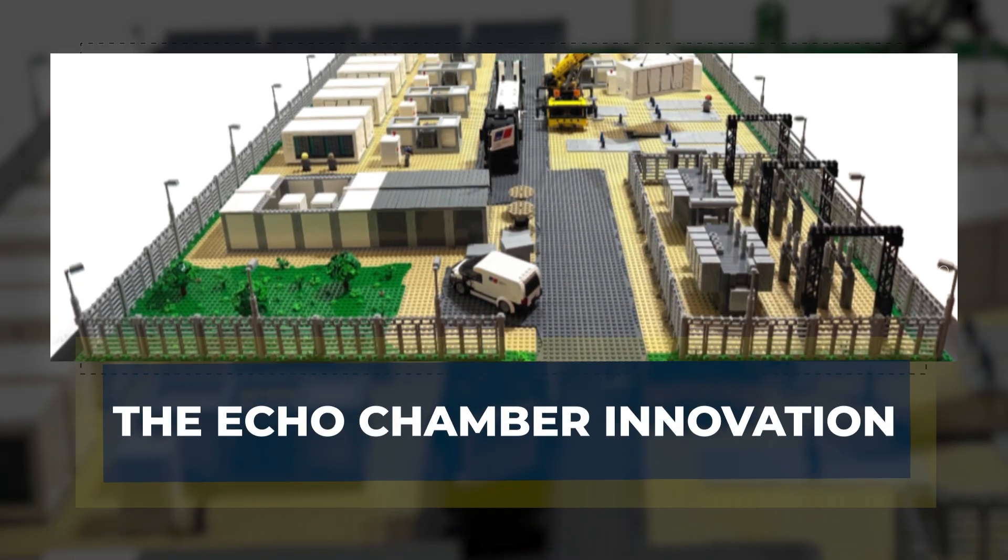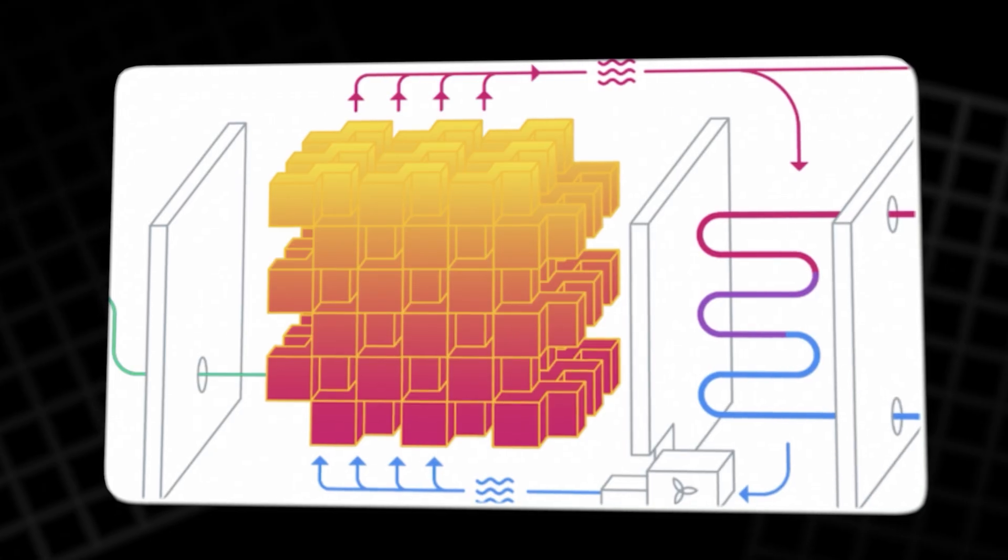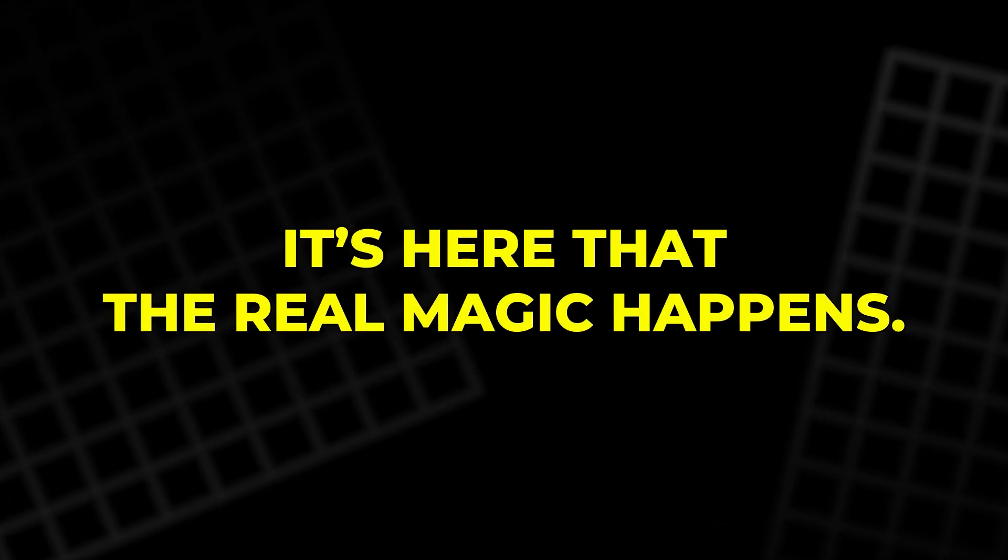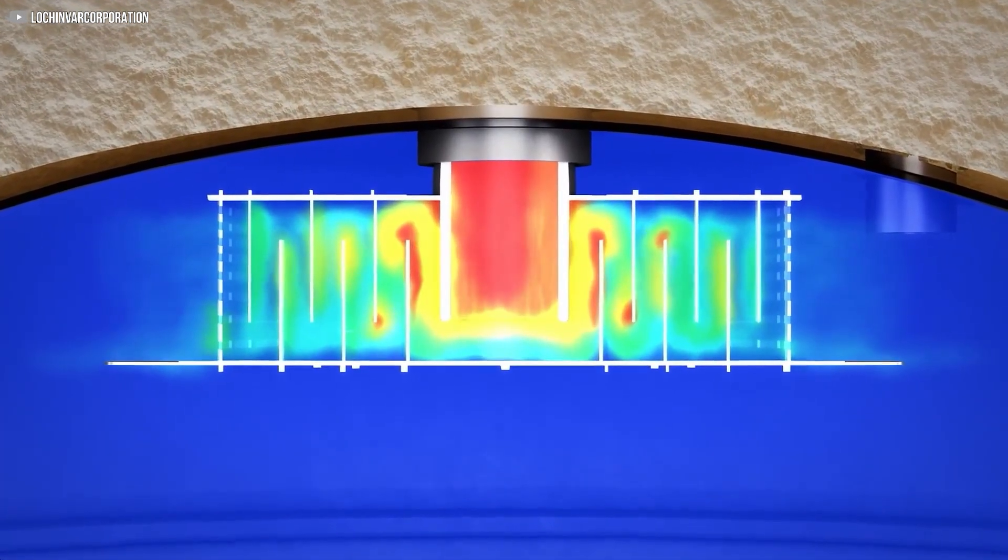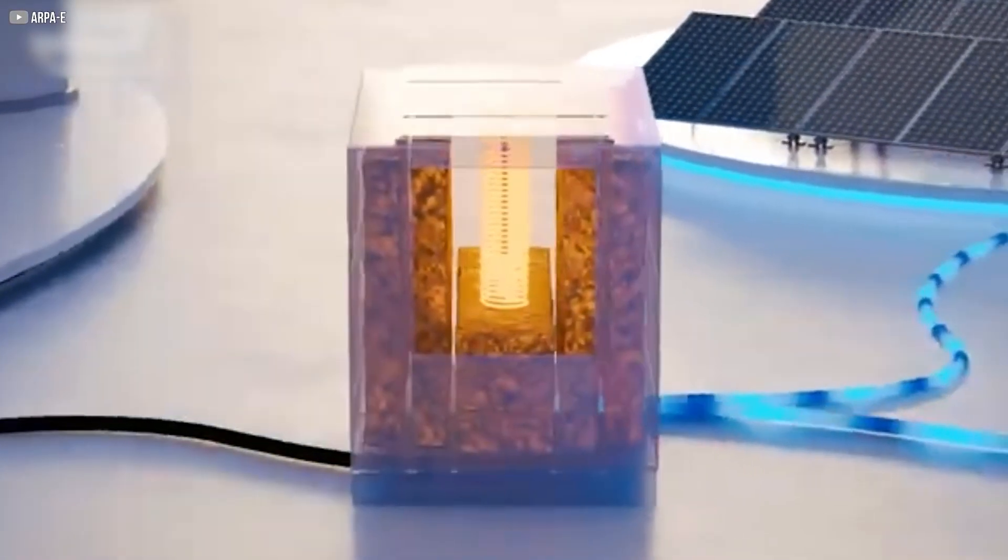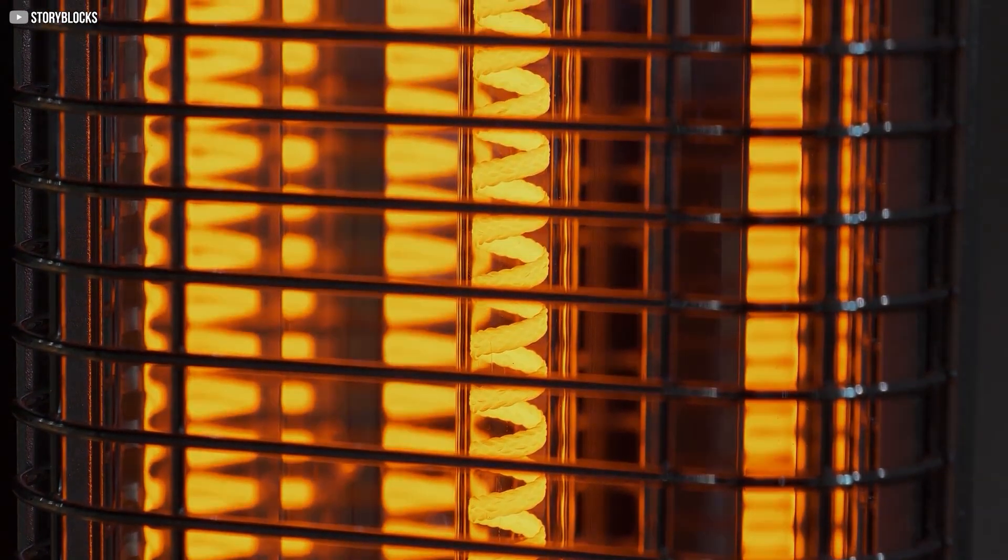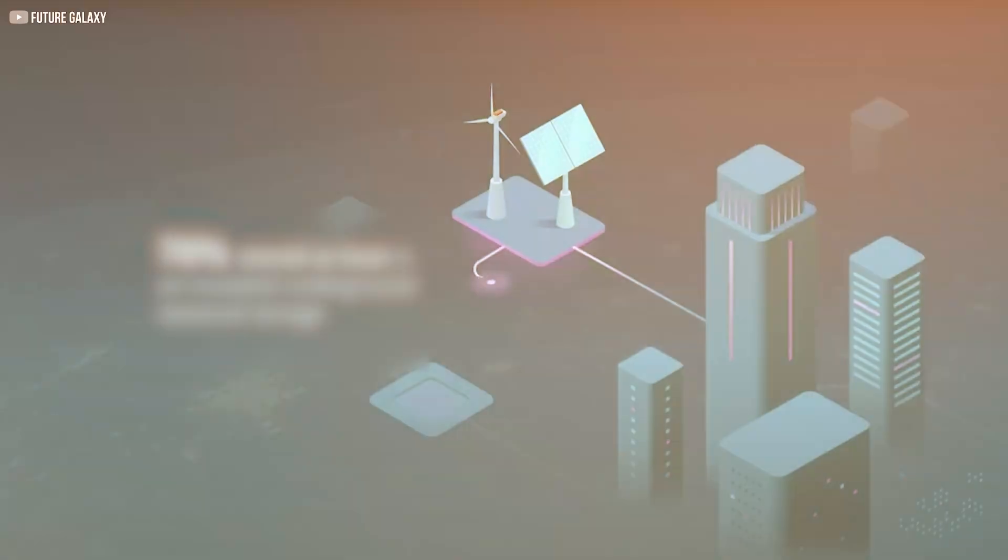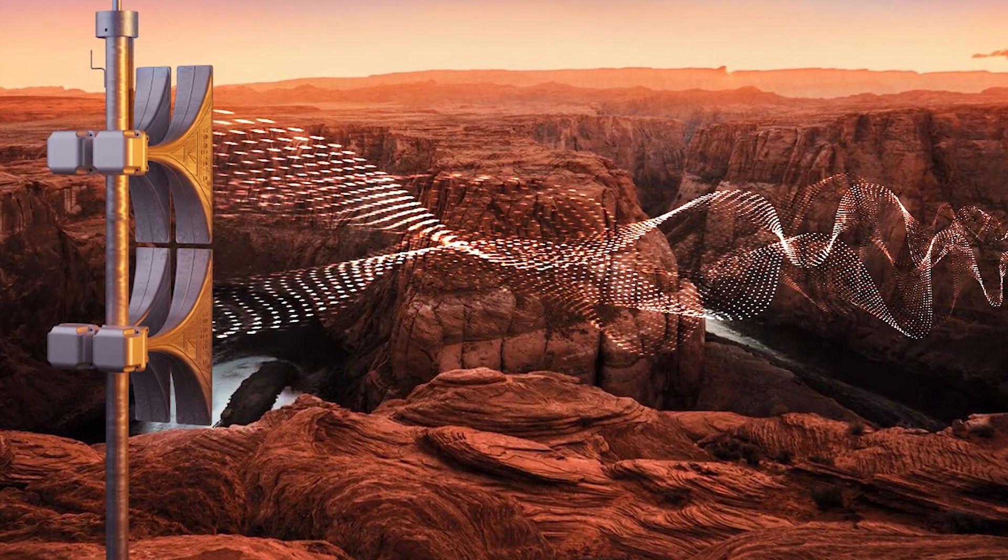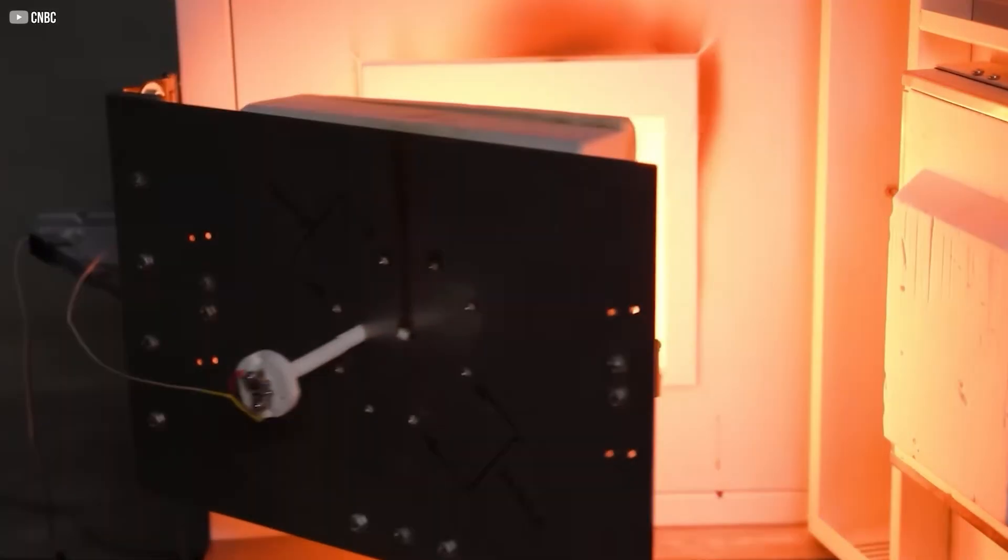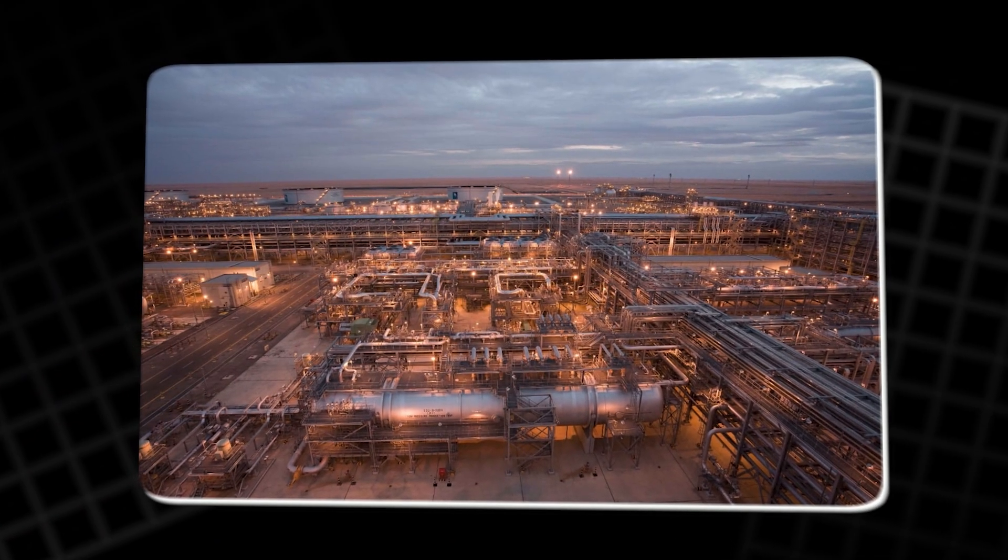The echo chamber innovation. At the heart of Rondo's system is something deceptively simple: an echo chamber made of heat. Instead of using air or water to move heat around like most thermal storage systems, Rondo uses radiation. Inside this chamber, special bricks are stacked tightly with electric heaters embedded among them. When powered, these heaters radiate heat outward, and the bricks absorb and bounce that heat back and forth, just like sound echoing in a canyon. This constant radiation allows all the bricks to heat evenly, without hot spots or slow conduction. It's an elegant fix to a frustrating problem.